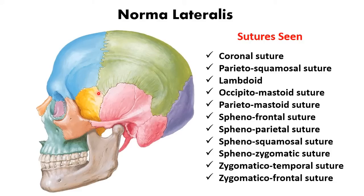The sphenoparietal suture lies between the sphenoid and the parietal bone. The sphenosquamosal suture lies between the sphenoid and the temporal bone. The sphenozygomatic suture lies between the sphenoid and the zygomatic bone.